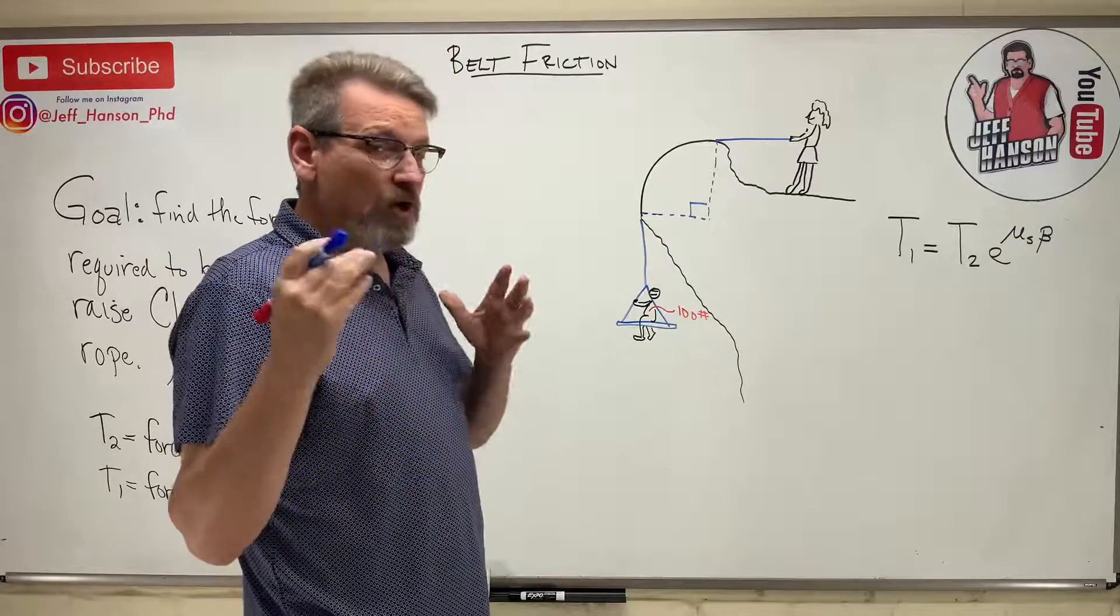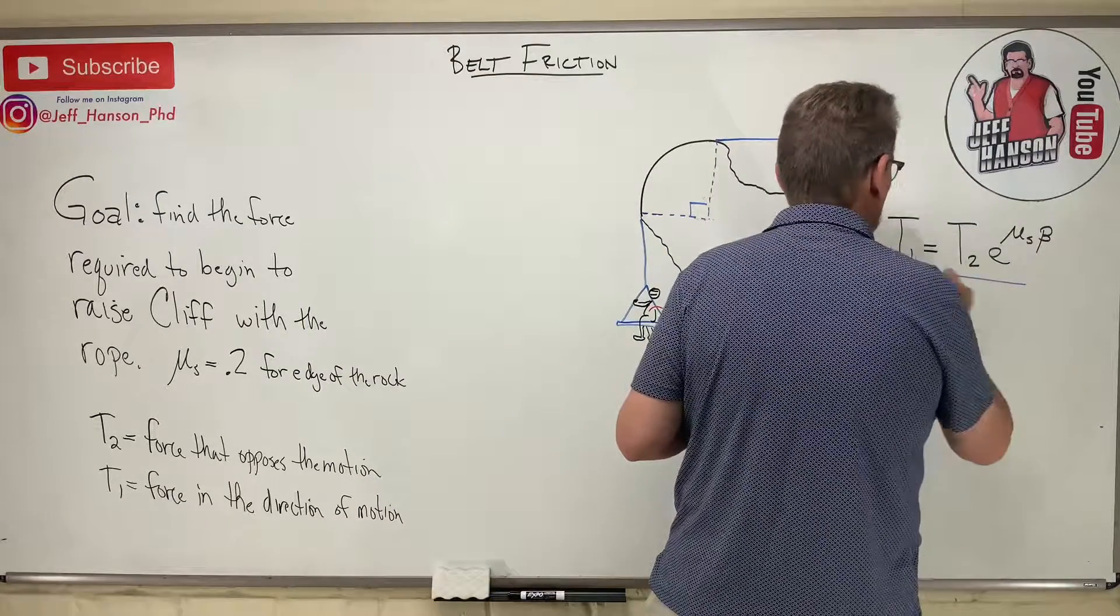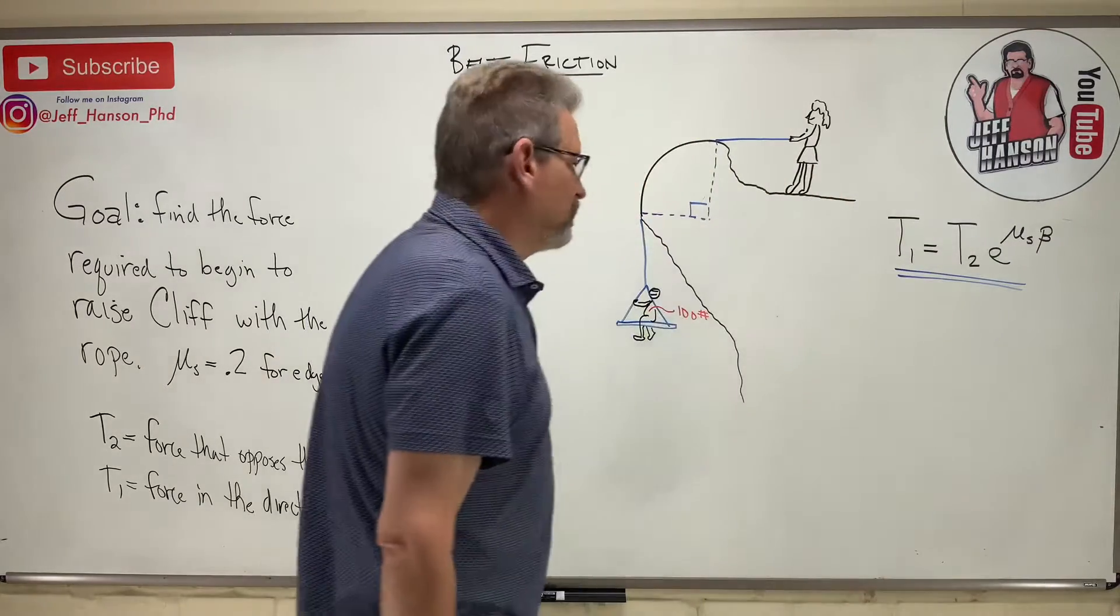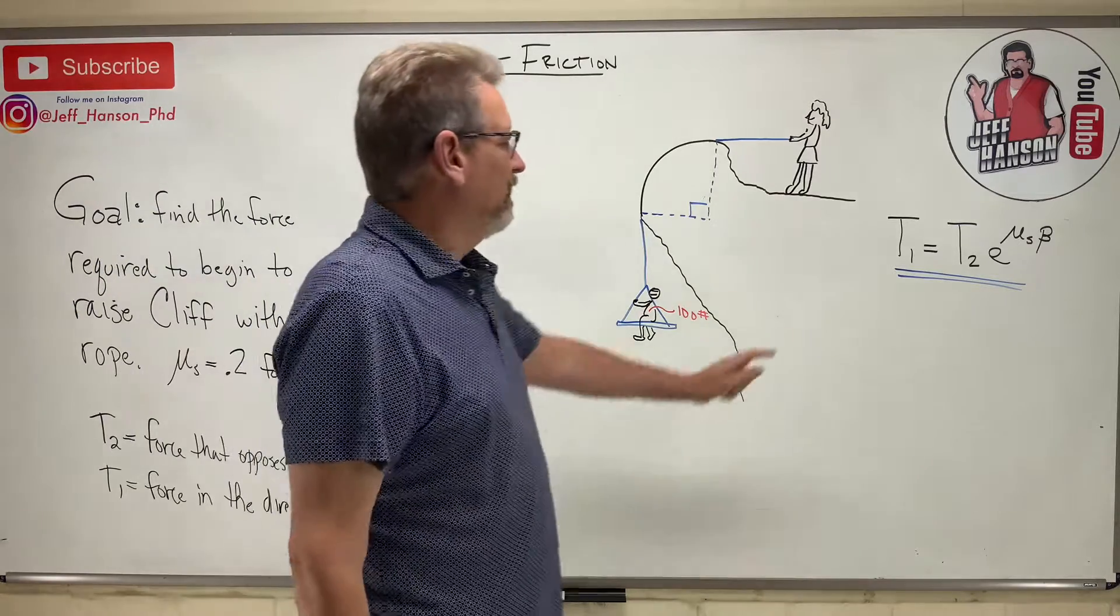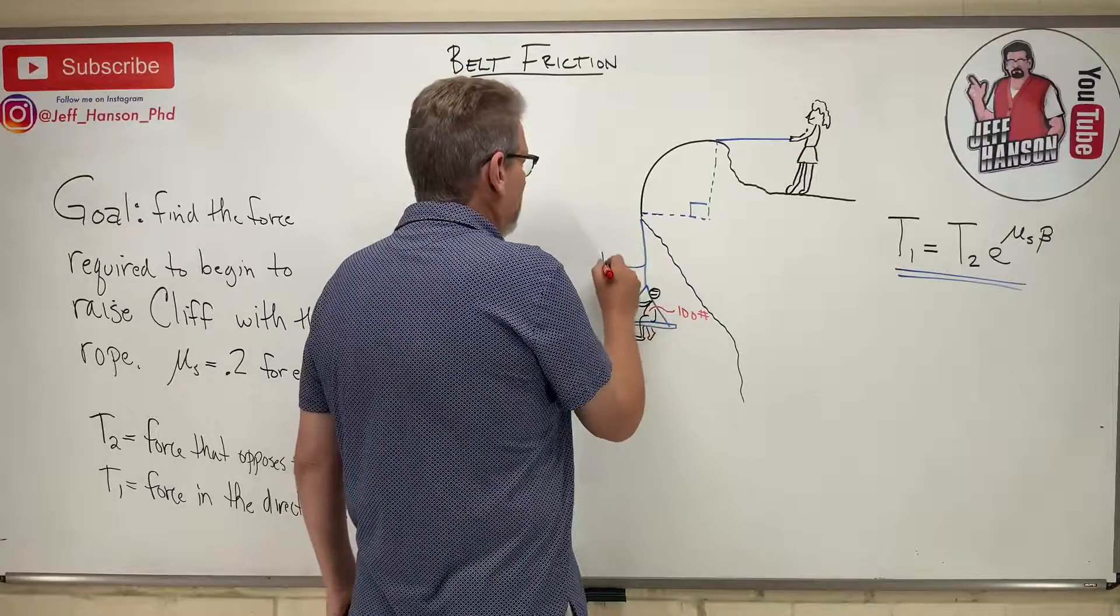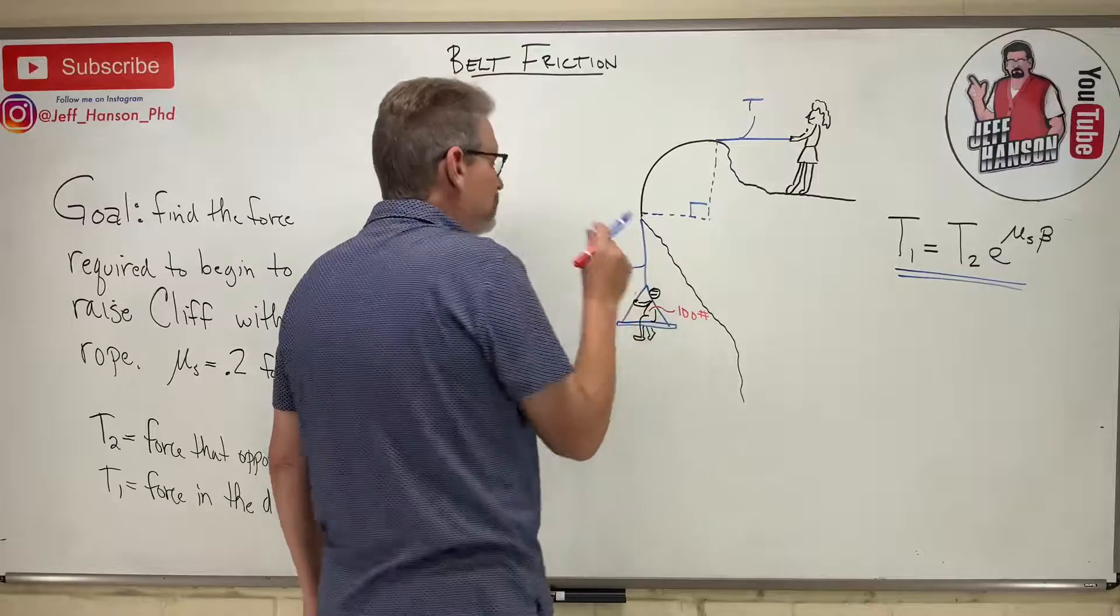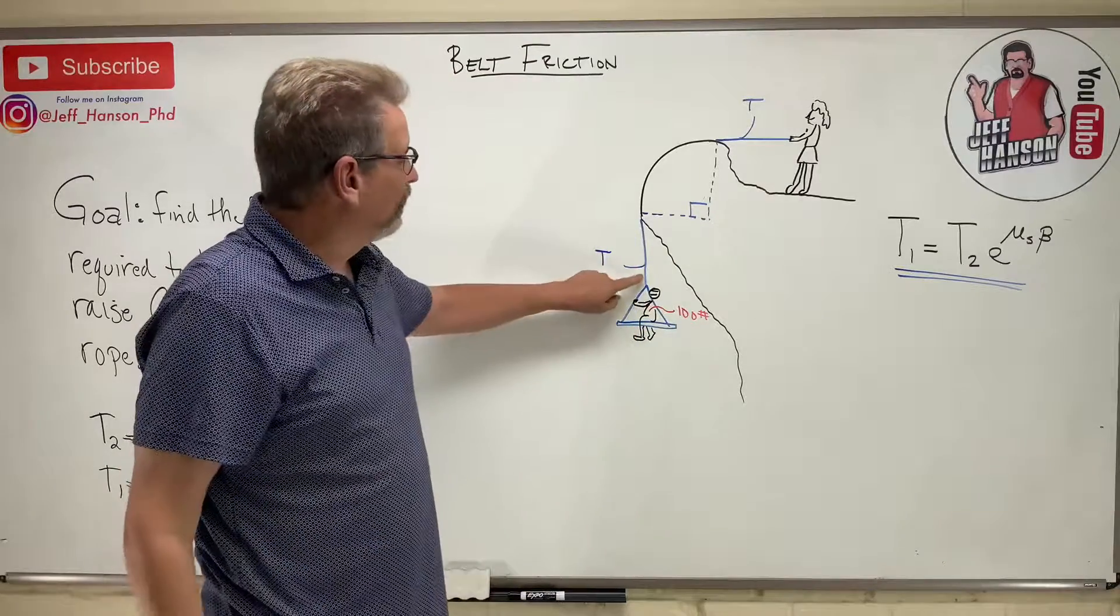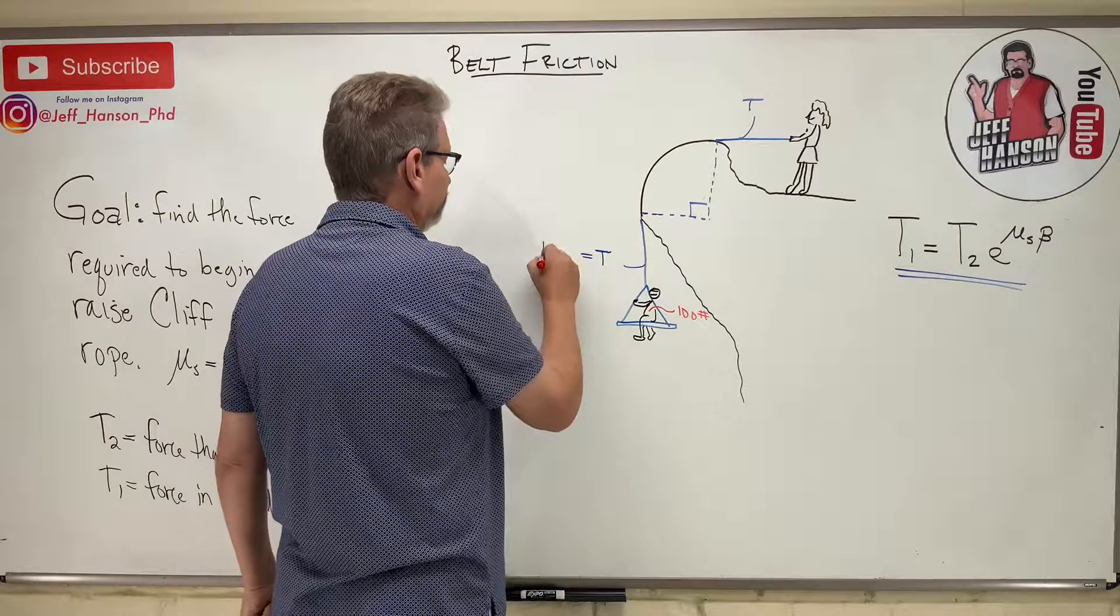We have a new equation for belt friction you have to remember. You've got two things: you got tension one and tension two. You have to decide which one of these is tension one and tension two. There's tension in the rope here and there's tension in the rope there. Now definitely those two tensions are going to be different.